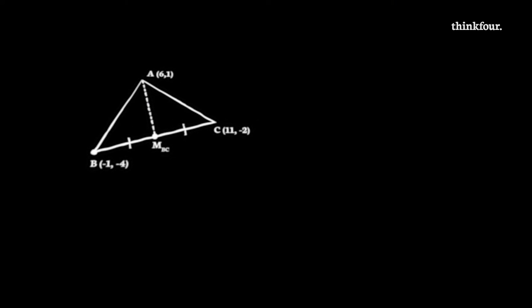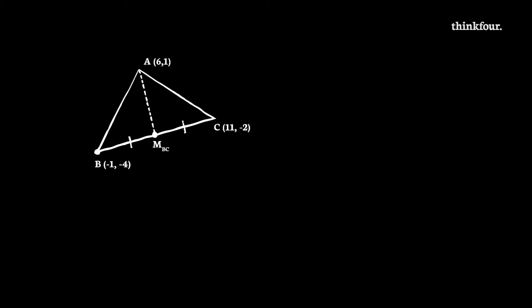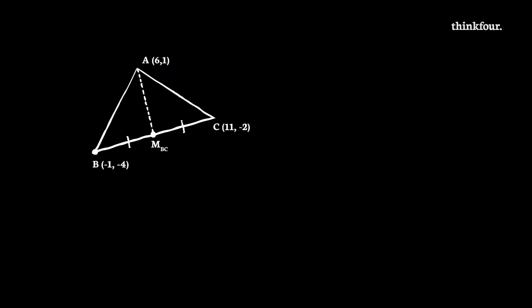Medians are lines that go from the vertex of a triangle to the midpoint of the other side, as shown here. We are finding the median from A. To work out the equation of the median, we need to use its gradient and a point that lies on it. We have a point that lies on it: point A.